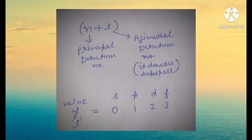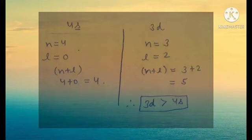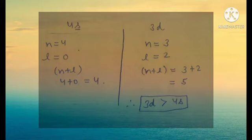When we calculate the N+L value for the 4s subshell: N = 4, L = 0, so N+L = 4+0 = 4. For the 3d subshell: N = 3, L = 2, so N+L = 3+2 = 5. This clearly shows that the 3d subshell has higher energy compared to the 4s subshell. Therefore, we fill electrons in 4s first, and then fill electrons in 3d.